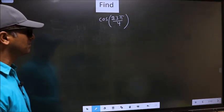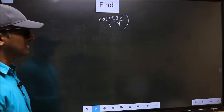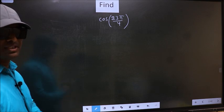Find cos 23π by 4. To find this, we should follow this method.